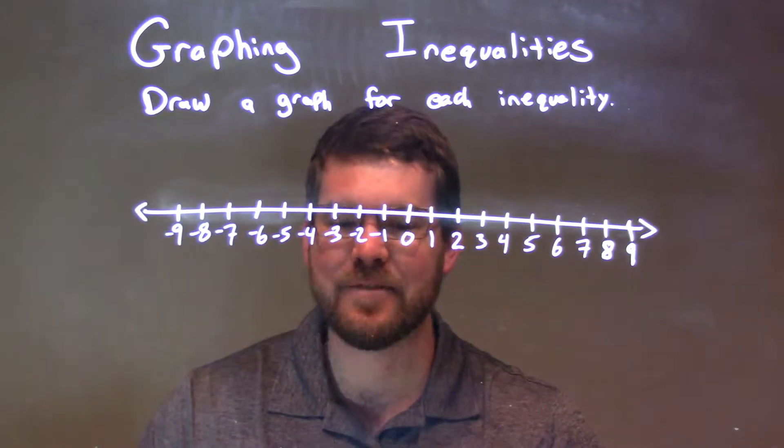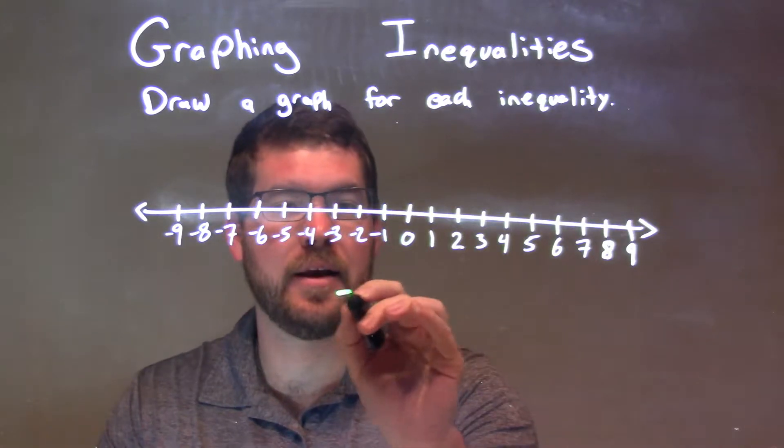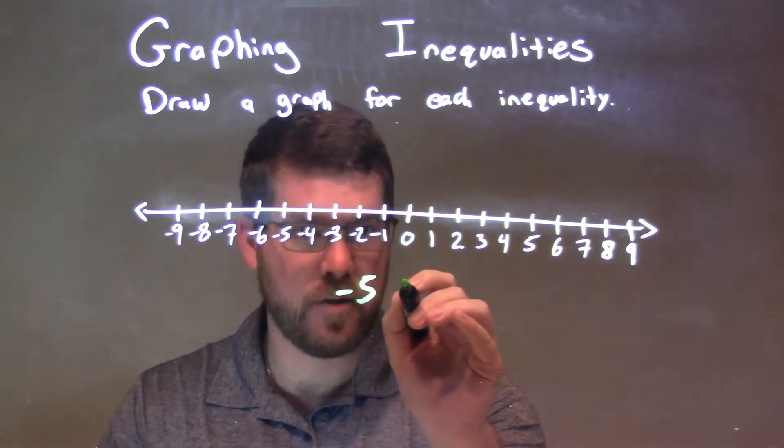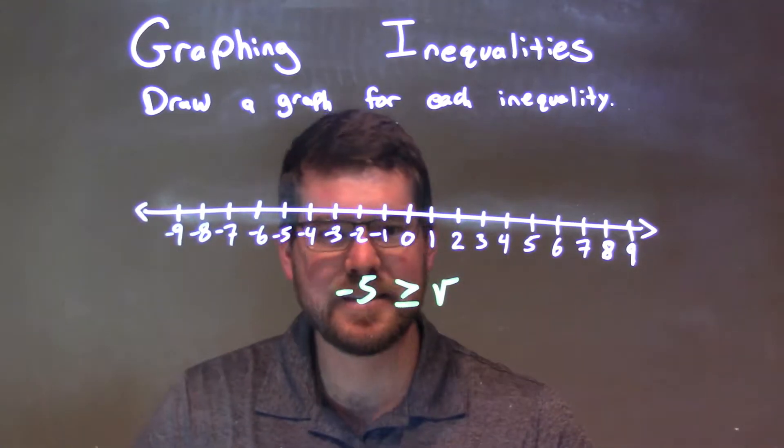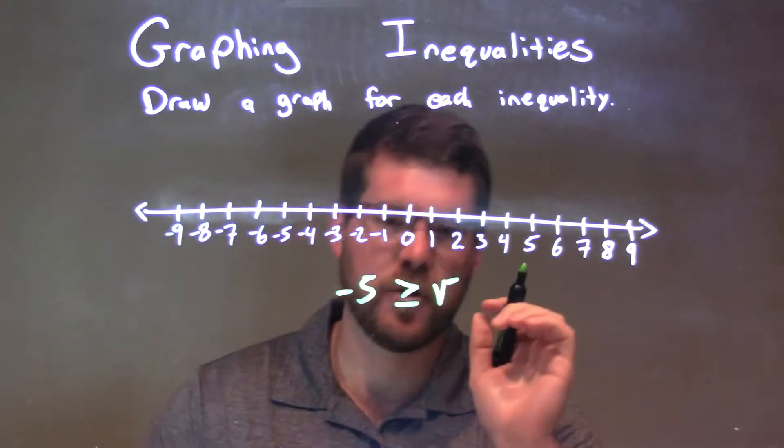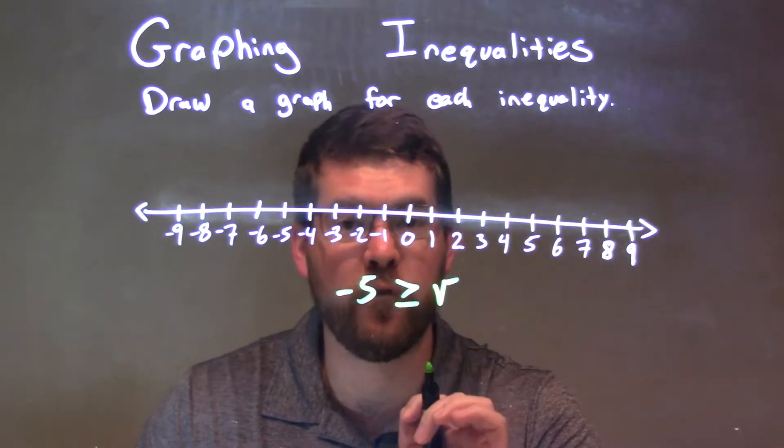If I was given this inequality, negative 5 is greater than or equal to V, what I like to do when I see something like this is I'm given negative 5 first, it's greater than or equal to V.